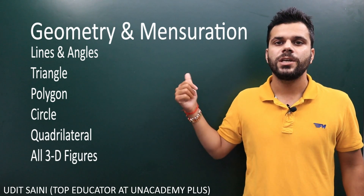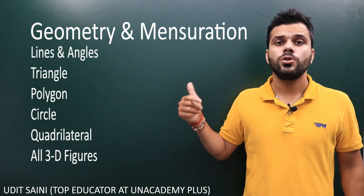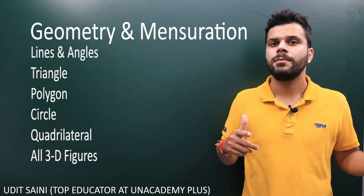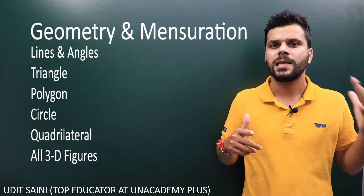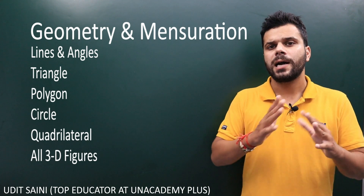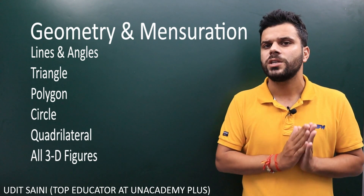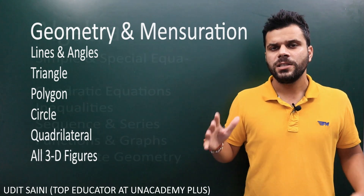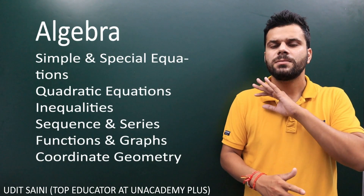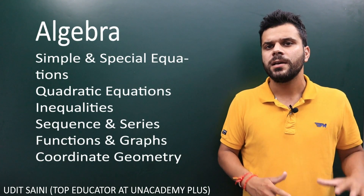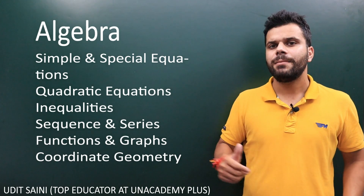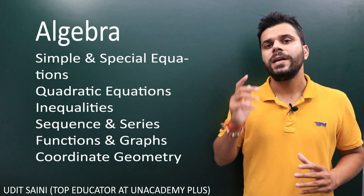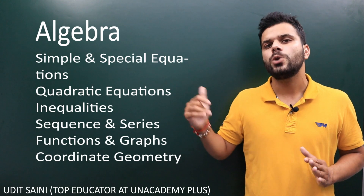The next important topic is Geometry and Mensuration. In CAT and other management entrance exams, Geometry and Mensuration carries around 20 percent weightage — approximately six to seven questions in CAT. The third main pillar is Algebra, which accounts for around 25 percent of questions in CAT.